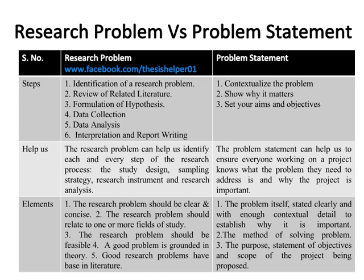The research problem helps us identify each and every step of the research process — the study design, sampling strategy, research instrument, and research analysis — while the problem statement can help ensure everyone working on a project knows what the problem they need to address is and why the project is important.